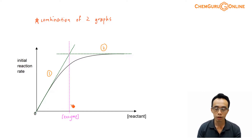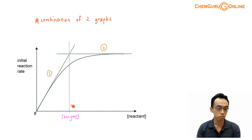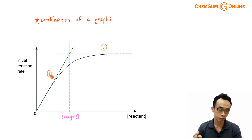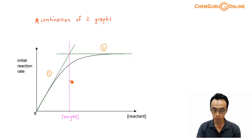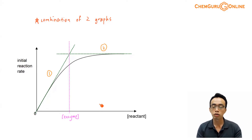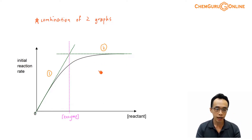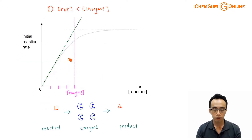So what we want to do is consider part by part. For graph number one, the earlier portion, when the concentration of the reactant is lower than the concentration of the enzyme, why does the graph increase as the concentration of the reactant goes up? And in the second portion, when the concentration of the reactant exceeds the concentration of the enzyme, why would the rate stabilize and not change anymore? Let's talk about this part by part, starting with the first portion when the concentration of the reactant is lower than the concentration of the enzyme.